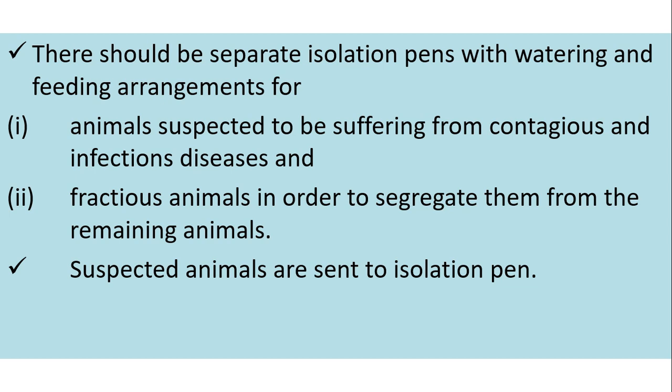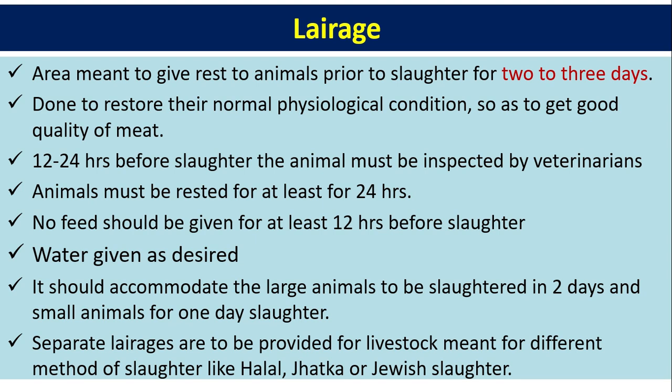Lairage is an area meant to give rest to animals prior to slaughter for two to three days, done to restore their normal physiological condition so as to obtain good quality meat. Animals must be inspected by veterinarians 12 to 24 hours before slaughter. No feed should be given for at least 12 hours before slaughter, but water should be given as desired. Lairage should accommodate large animals to be slaughtered in two days and small animals for one day. Separate lairages should be provided for livestock meant for different methods of slaughter, such as Halal, Jhatka, or Jewish slaughter.